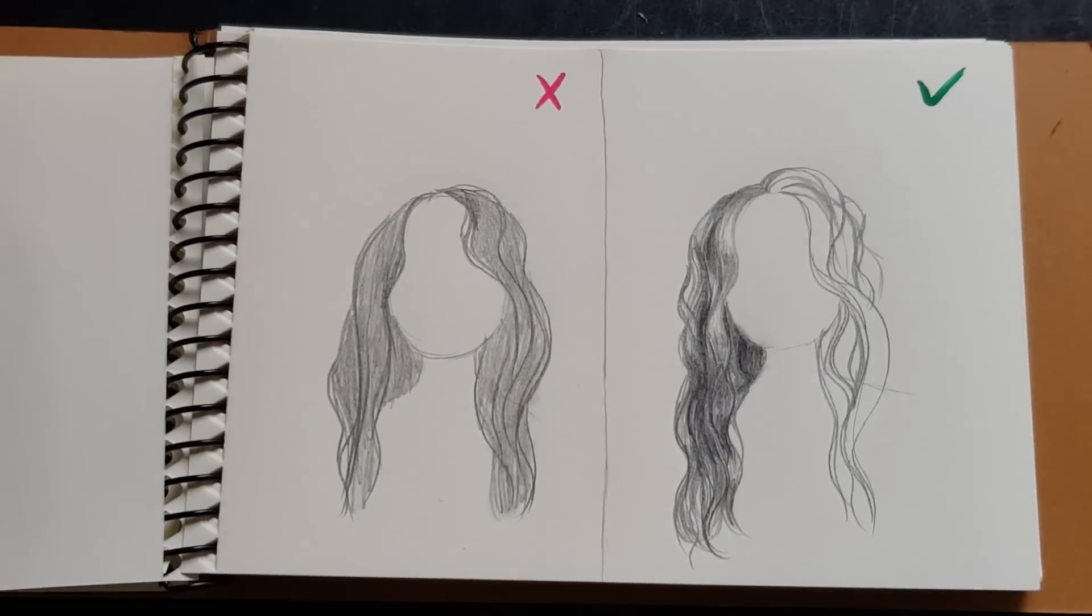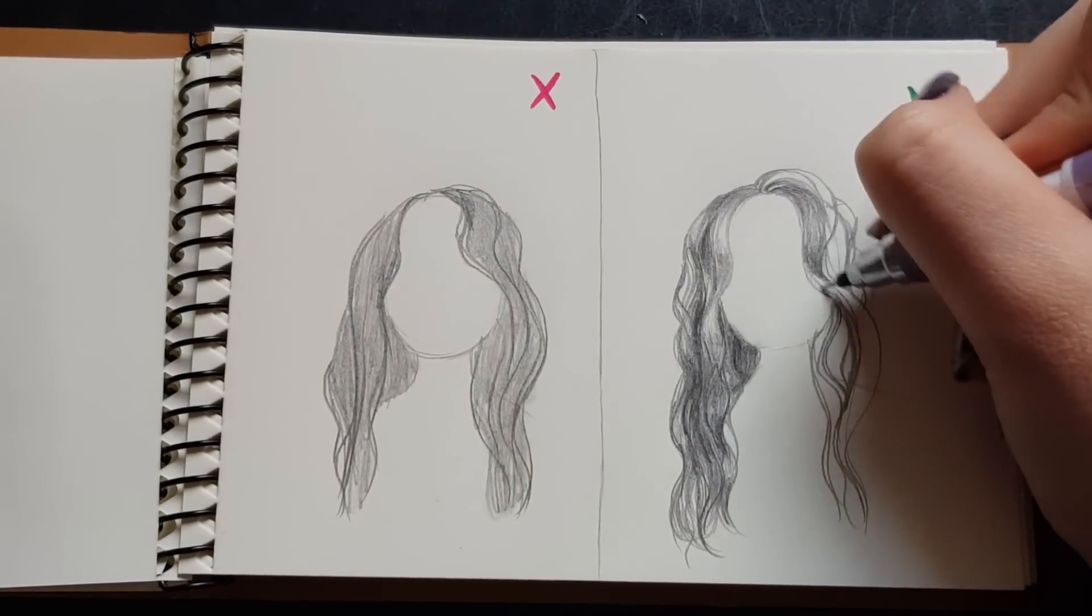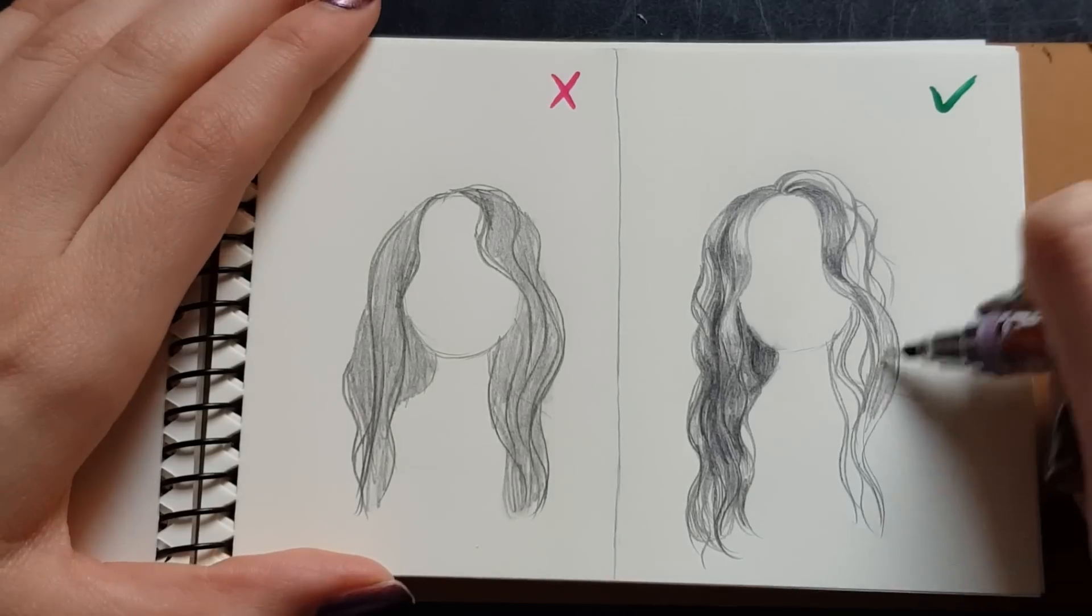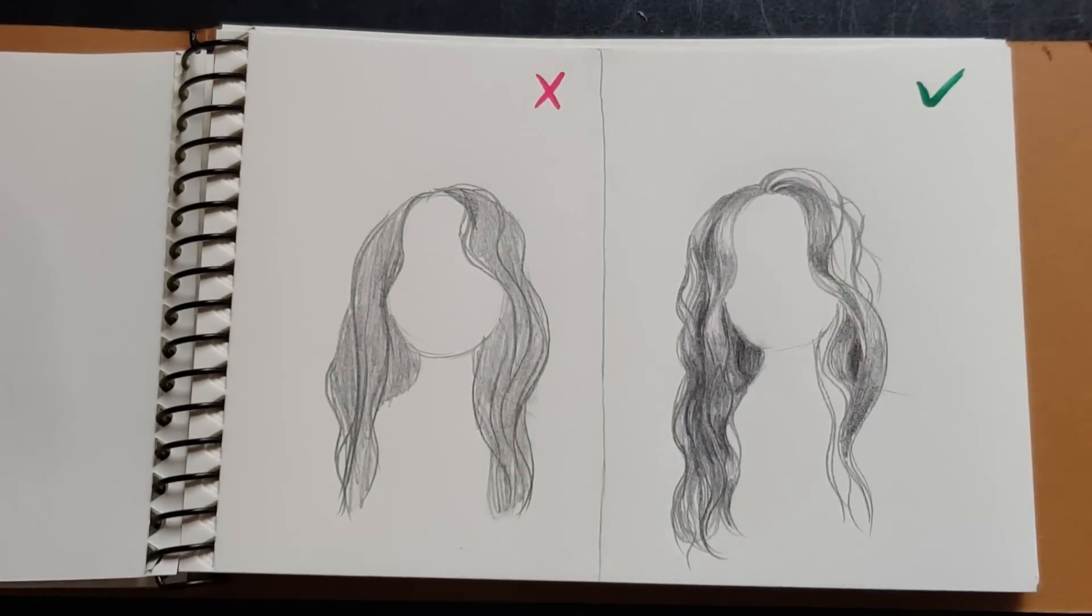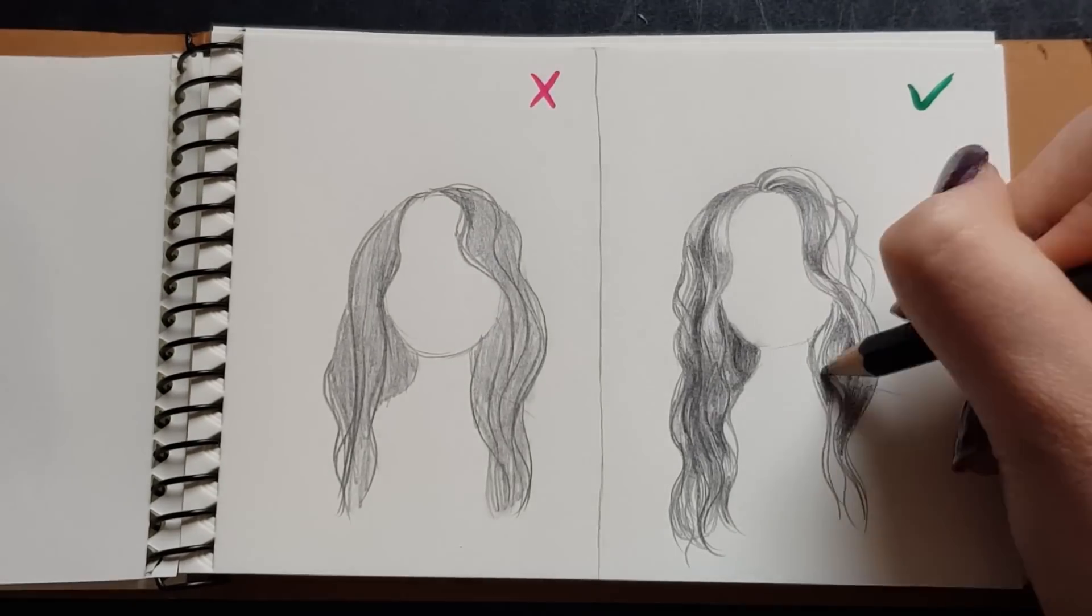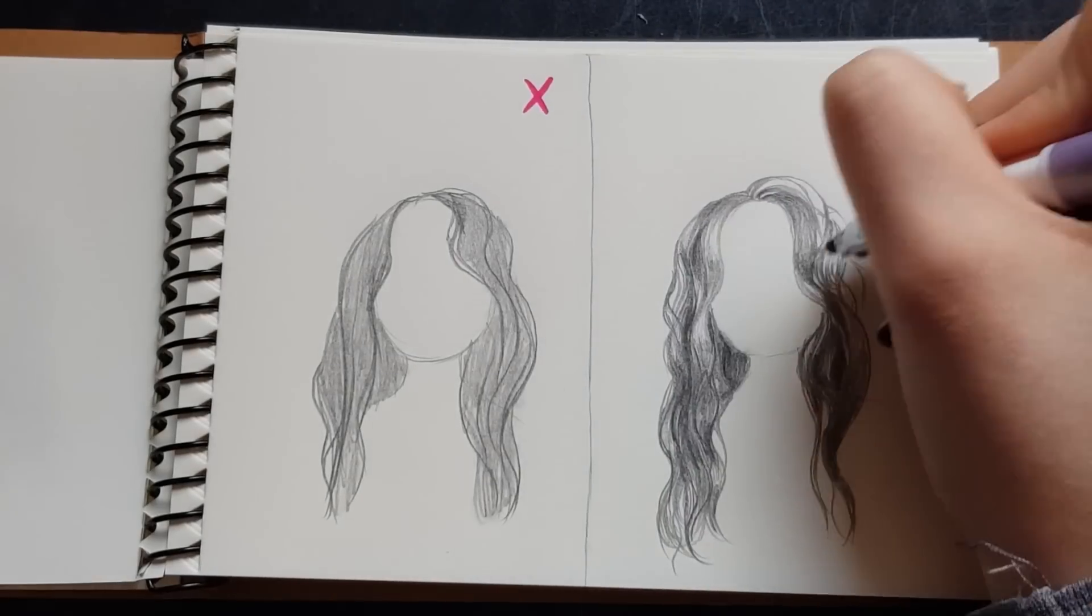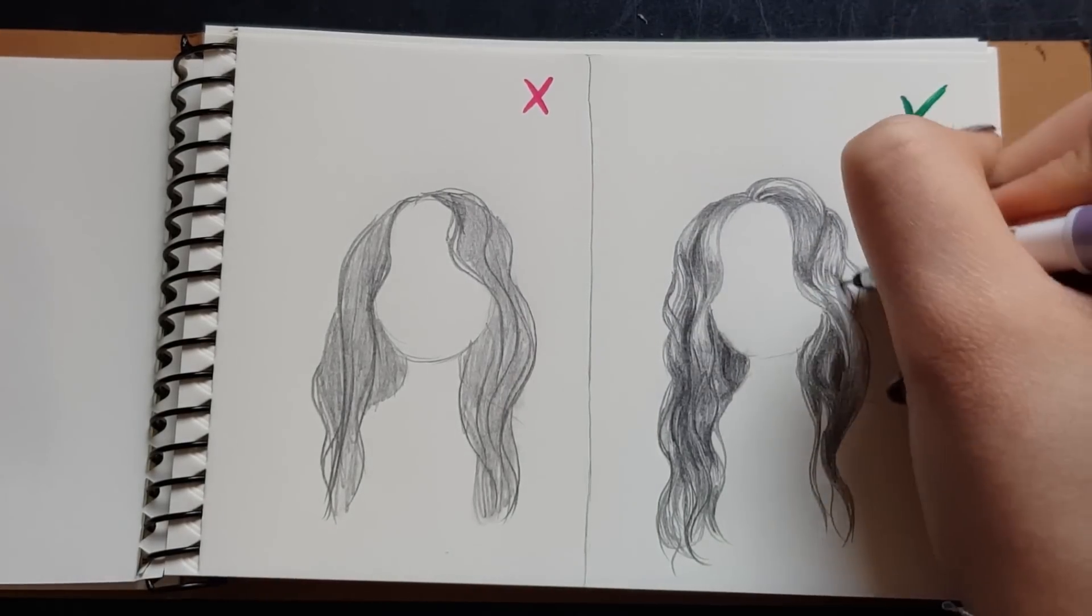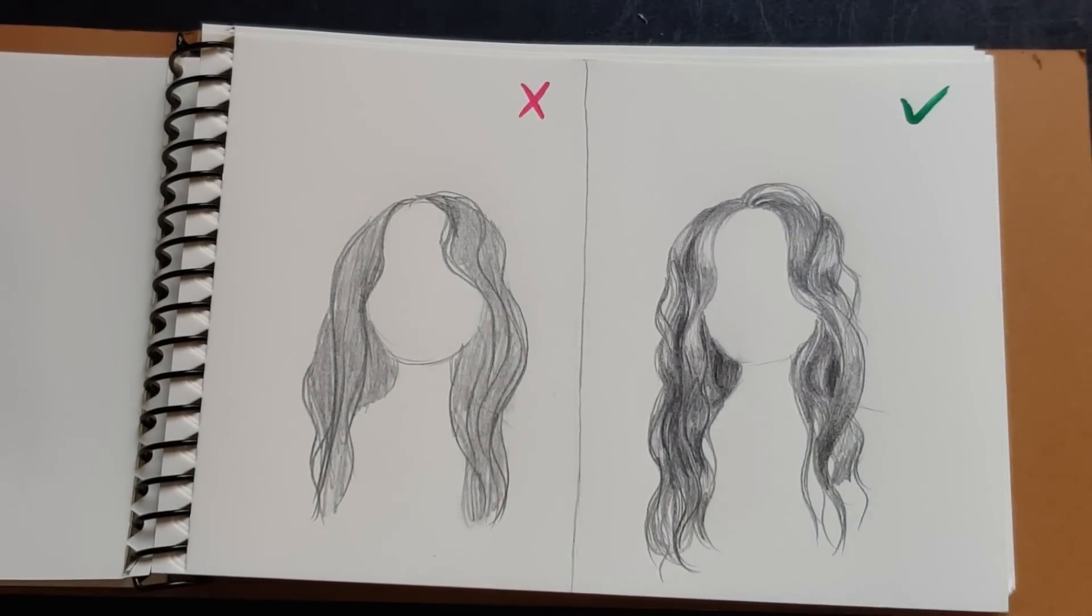One thing I think that looks really beautiful is when the left side of the hair and the right side of the hair is not the same. I think it looks more natural when it's actually not symmetrical. So in my drawing on the right side, the waves are bigger than the left side so it looks more natural in my opinion.